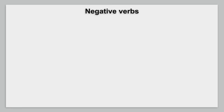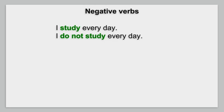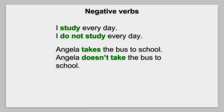Simple present and simple past verbs don't use helping verbs. To make a simple present verb negative, add the helping verb do or does. I study every day. I do not study every day. Angela takes the bus to school. Angela doesn't take the bus to school.